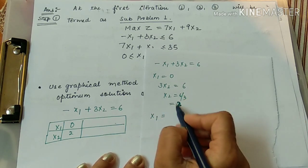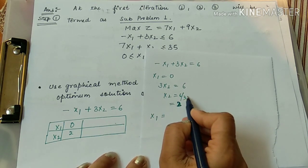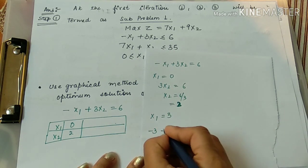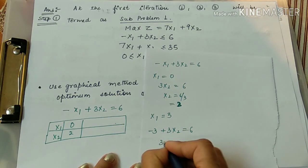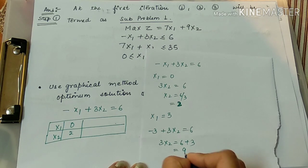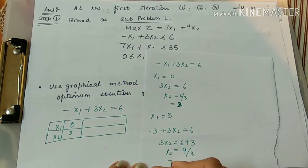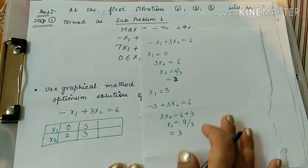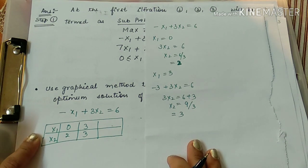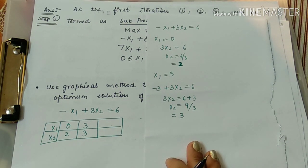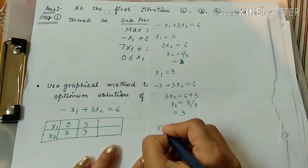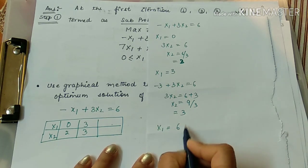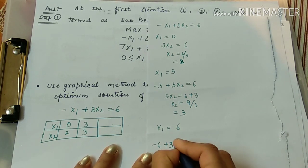Now putting x1 equal to 3 — since this is a multiple of 3 — minus 3 plus 3x2 equals 6, so 3x2 equals 9, giving x2 equals 3. Putting x1 equal to 6: minus 6 plus 3x2 equals 6, so 3x2 equals 12, giving x2 equals 4. So the values for the first equation are (0,2), (3,3), and (6,4).